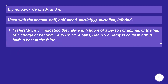Demi- prefix. Etymology from demi adjective. Used with the senses: half, half-sized, partial, curtailed, inferior. In heraldry, indicating the half-length figure of a person or animal, or the half of a charge or bearing. 1486, Book of St. Albans: 'Demi is a Chaldean army's half-a-beast in the field.'